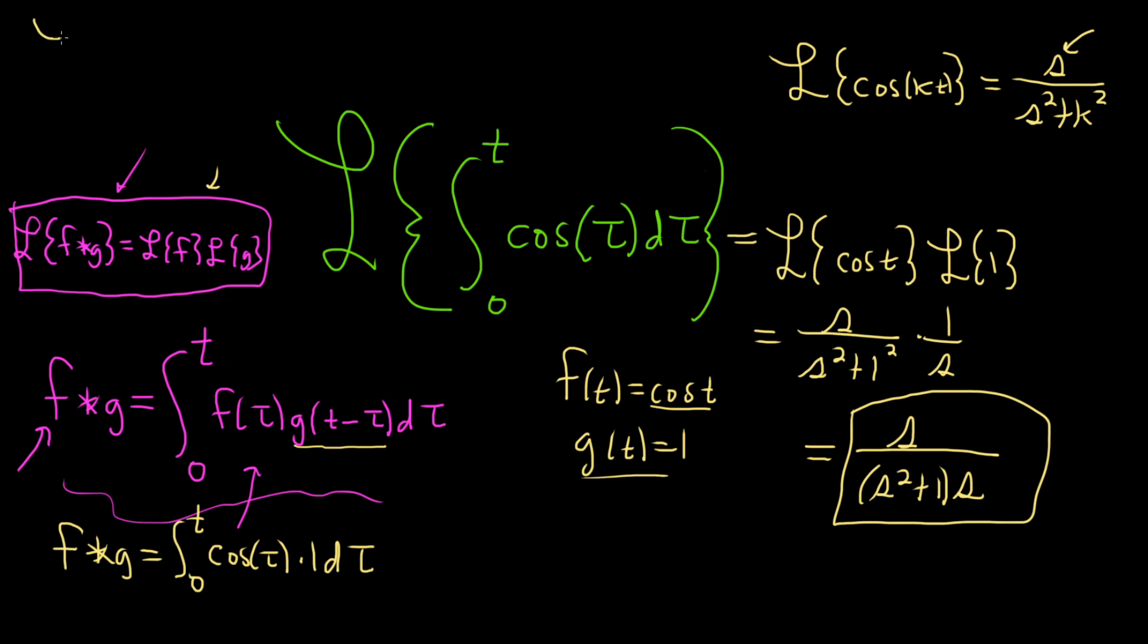So this is really the Laplace of—we're integrating, so we get sine t, or sine tau, rather. And we're going from 0 to t. So this is equal to the Laplace of sine t minus sine of 0.